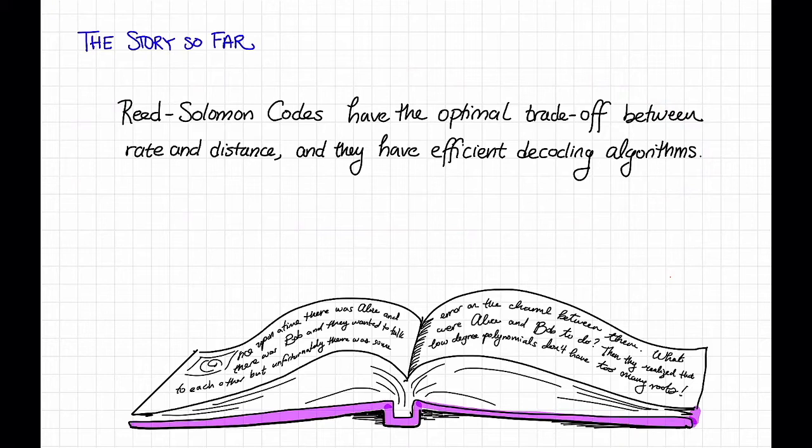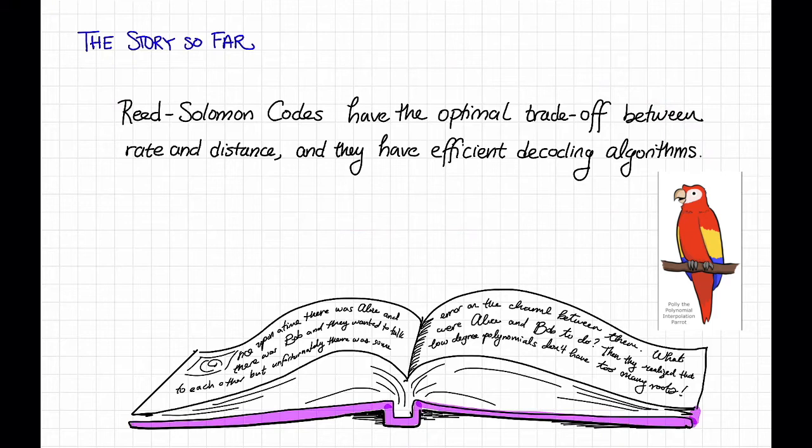We saw Reed-Solomon codes, which are based on this really nice idea about low-degree polynomials. Low-degree polynomials don't have too many roots. Yes, thank you, Polly.